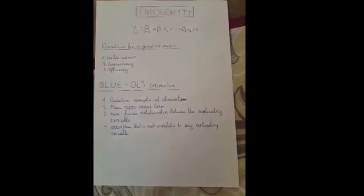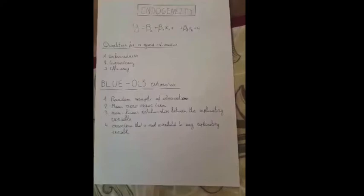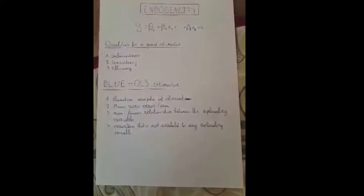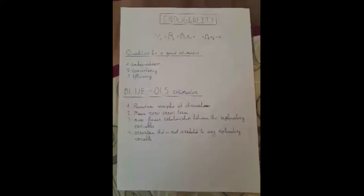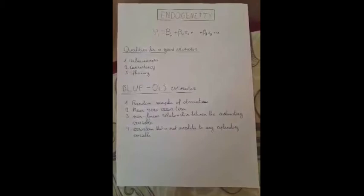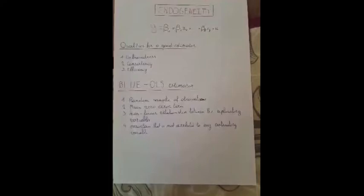An estimate is said to be an unbiased estimate of a given parameter when the expected value of that estimator can be shown to be equal to the parameter being estimated. An estimator is said to be consistent if increasing the sample size produces an estimate with smaller standard error. Therefore, your estimate is consistent with the sample size. An efficient estimate is one which has a small standard error among all unbiased estimators. The best estimator is one which is the closest to the population parameter being estimated.